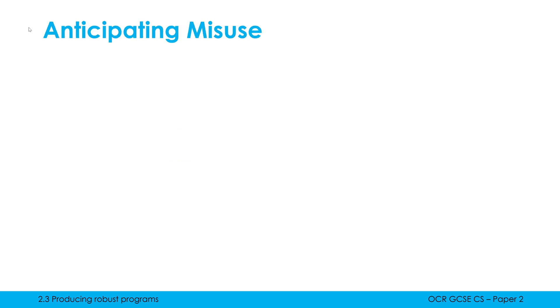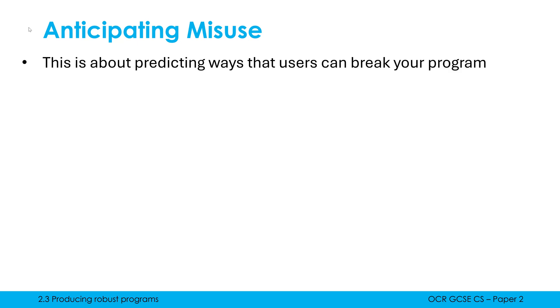Anticipating misuse is quite negative, quite pessimistic. You are not really trusting any user that could end up using your program, so you're predicting ways that users can break it.